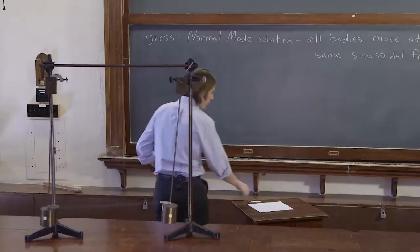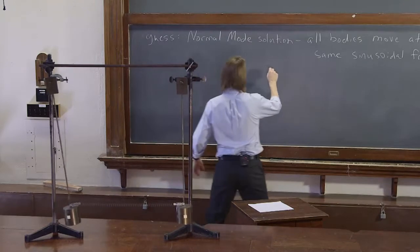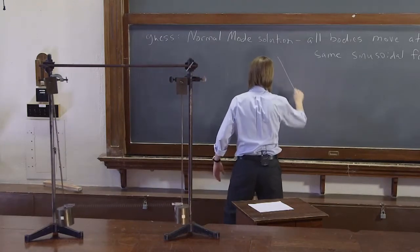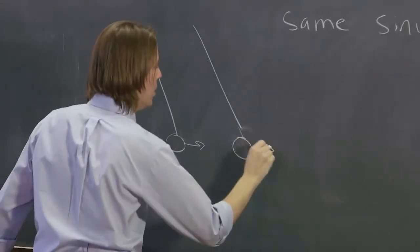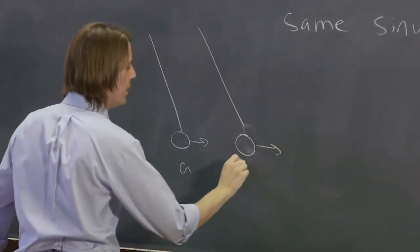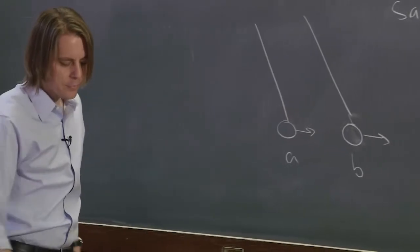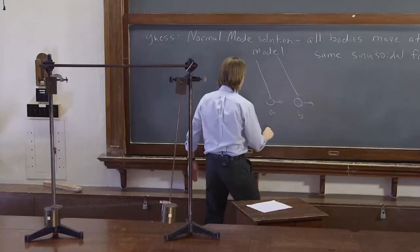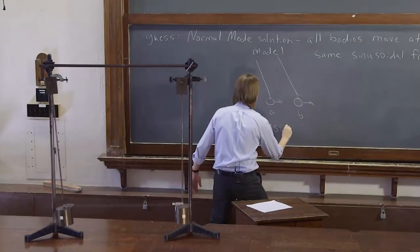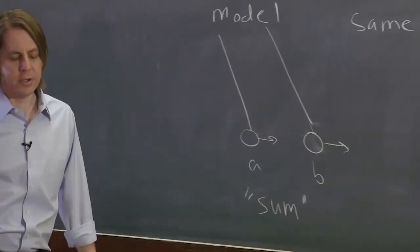So we could sort of draw that one. You could kind of think of it as like this. They're both kind of, I'll draw them somewhat exaggerated. They're both moving like that, A and B. We'll call that mode one. And we're going to give it the nickname sum, and you'll see why in a minute.